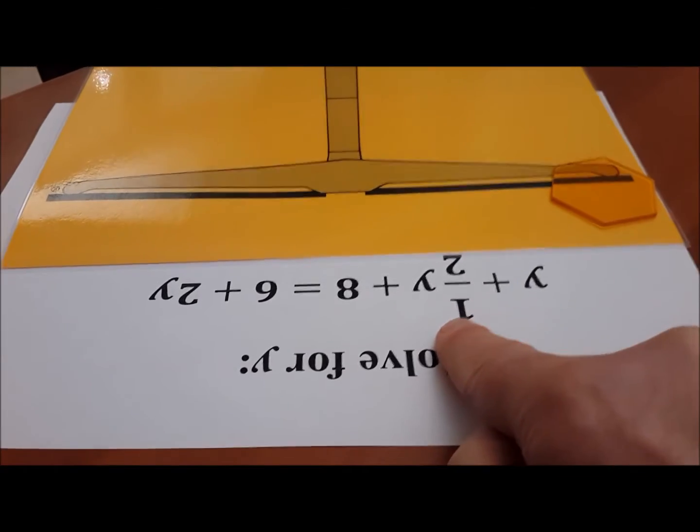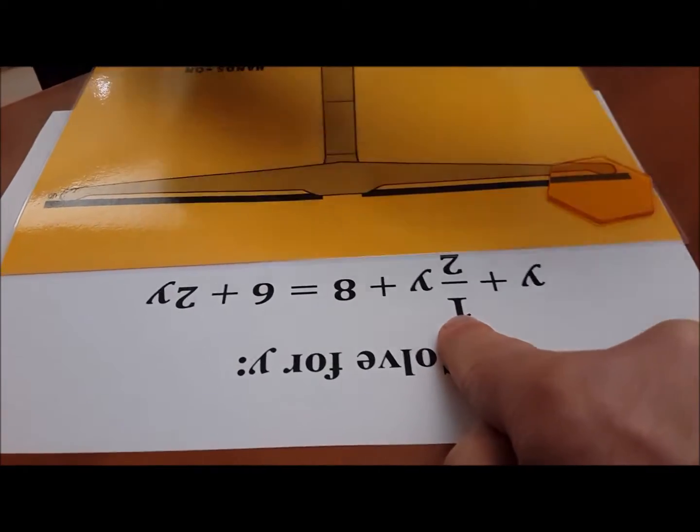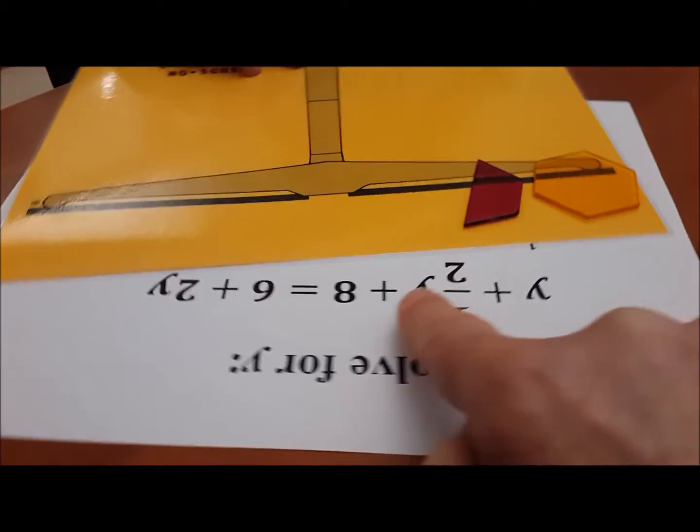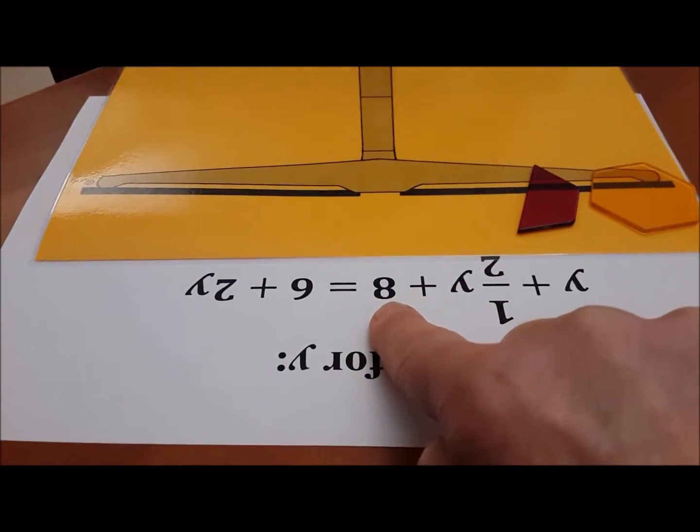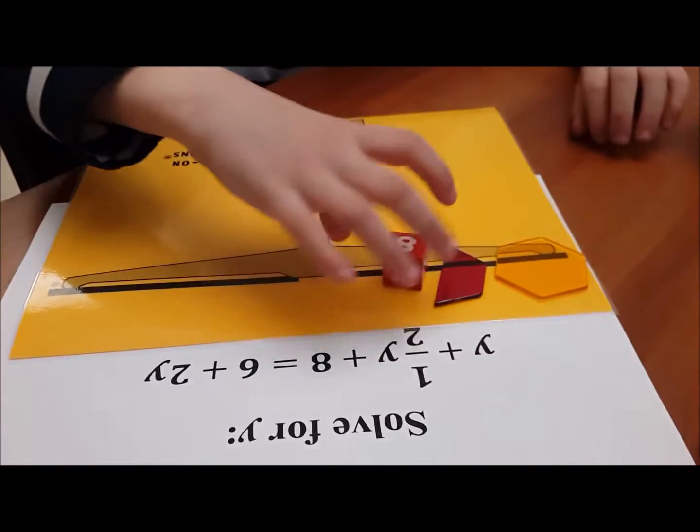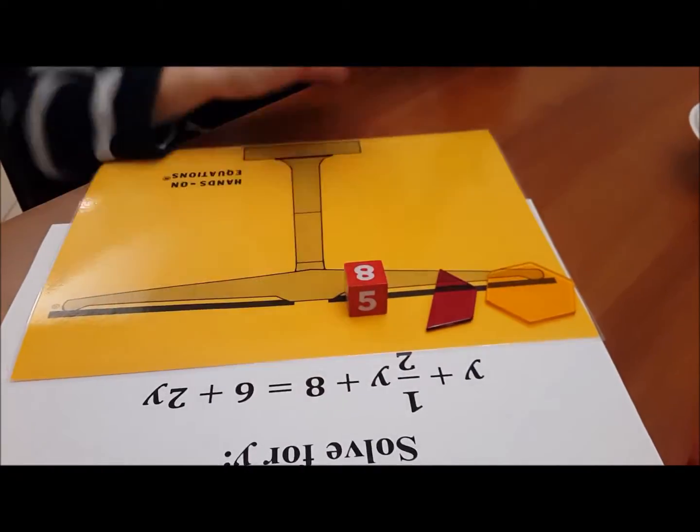And now we need to add what? A half of a y. And we need to add something else. We need to add an h cube. Good.